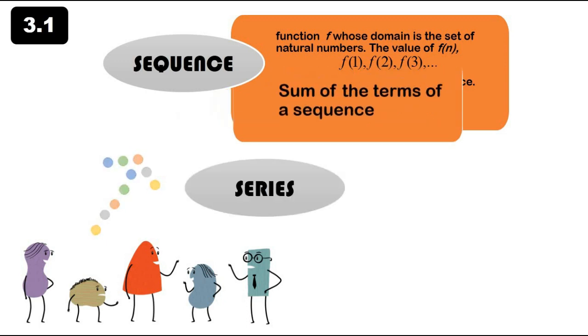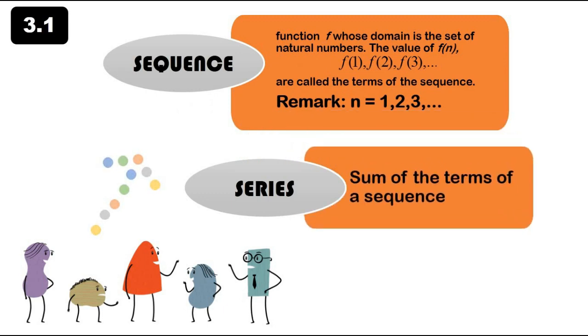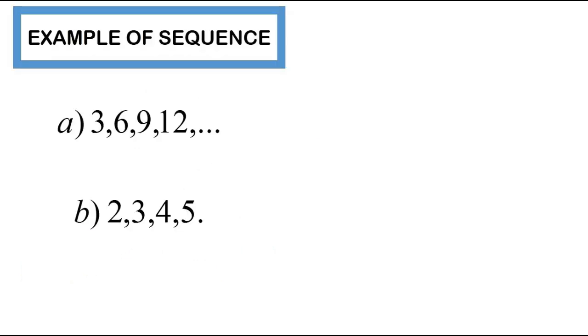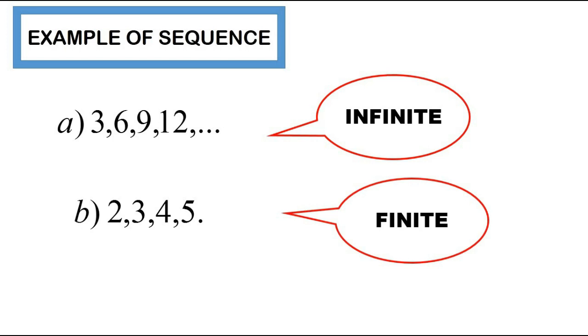Meanwhile, series is the sum of the terms of a sequence. Examples of sequence might be 3, 6, 9, 12, and so on, which we call an infinite sequence. We also have finite sequences which have a definite end.